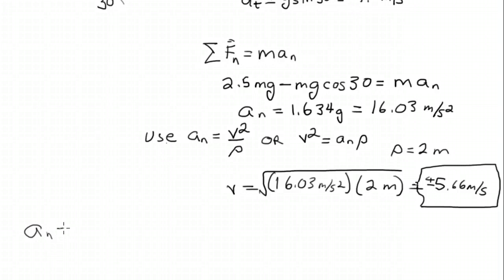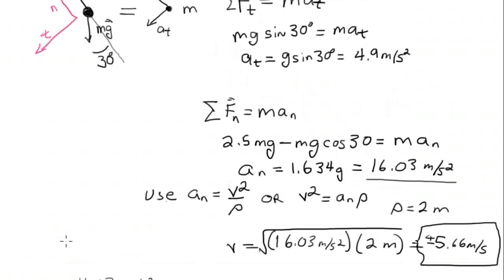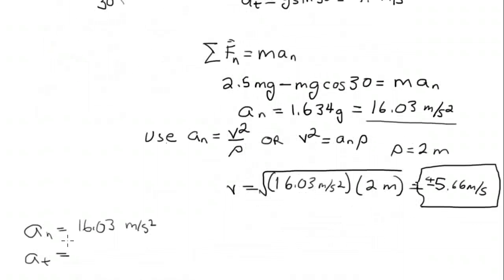Now let's rewrite the solutions we calculated. So the normal component of the acceleration was up there. It was 16.03 meters per second squared. And then we've got the tangential component of the acceleration. We calculated that further up. Let me go back up there a second. There was, let's write that down, 4.9 meters per second squared.